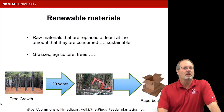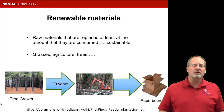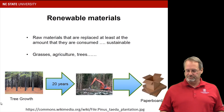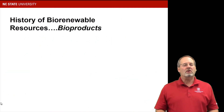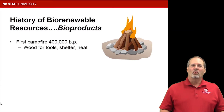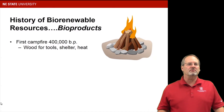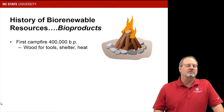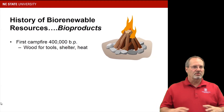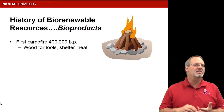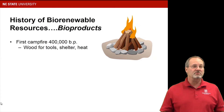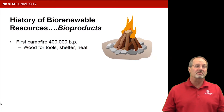I talked about forests, but agriculture and even grasses used for commercial purposes can also be sustainable. Now let's talk about society and some of the products we've used over the years. One of the first renewable products was wood from trees — early man cut down wood, piled it into a fire pit, and used it to cook and keep warm. That happened 400,000 years ago, and it's a great example of a renewable resource we're still using today in a similar fashion.